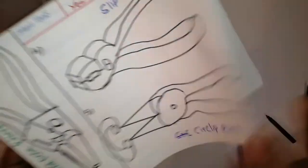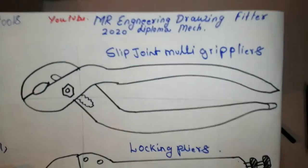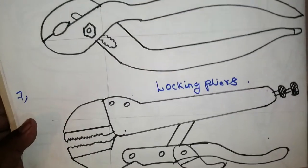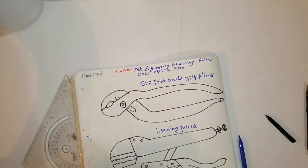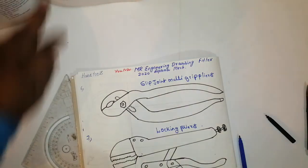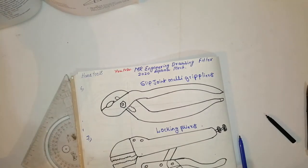Circular grip plier, slip joint multi-gripper plier, and locking plier. There are seven types, and one plier is generally used. Seven types for different purposes: side cutting, flat nose, round nose, slip joint, multi-joint slip joint, circular grip, and locking plier.